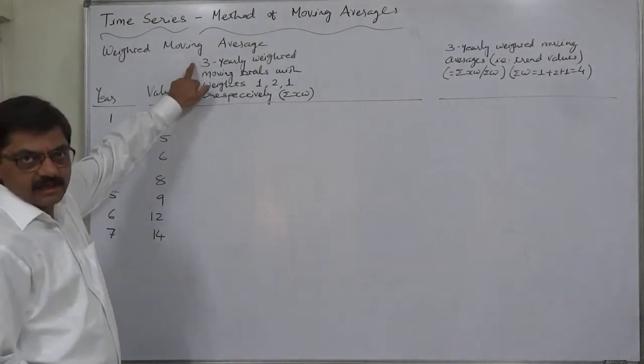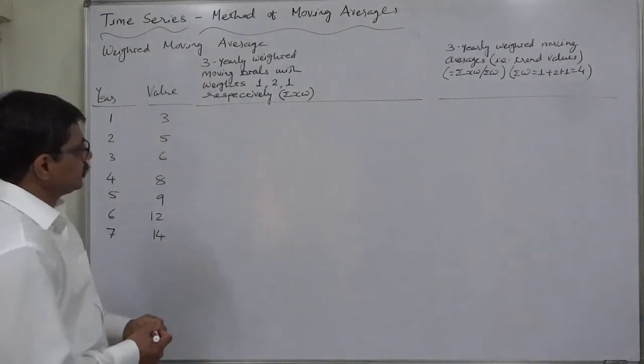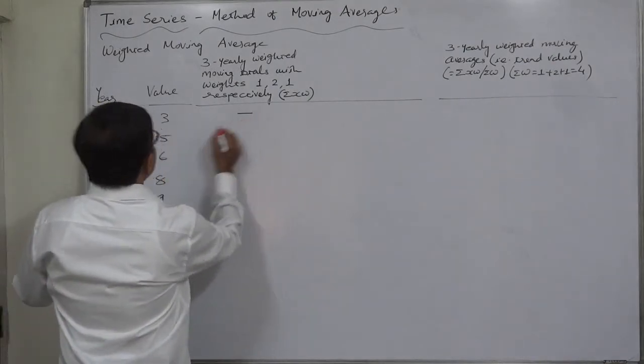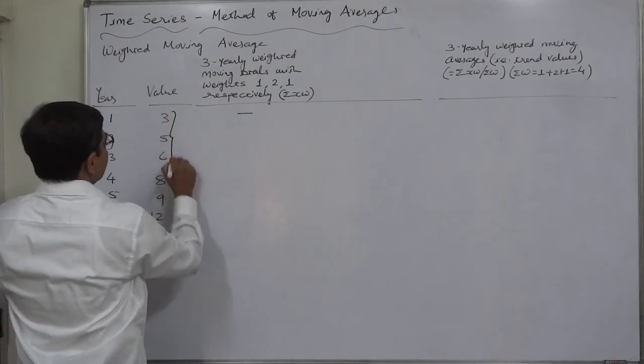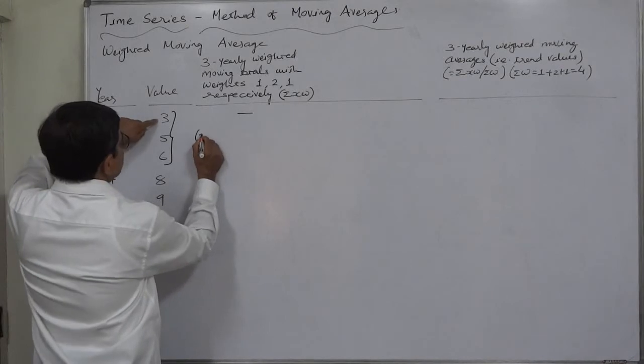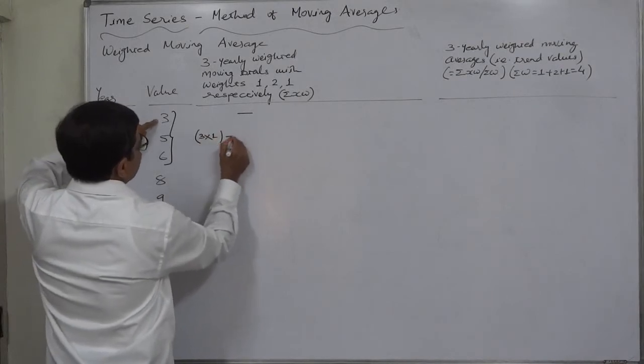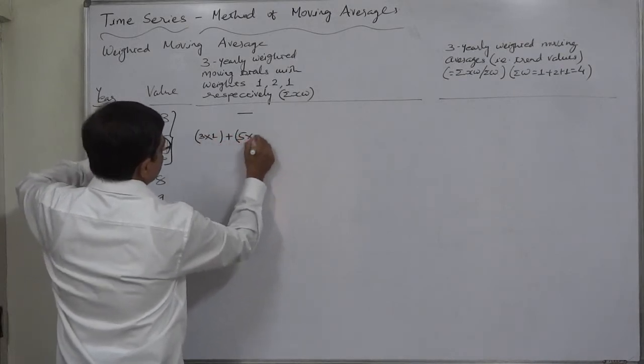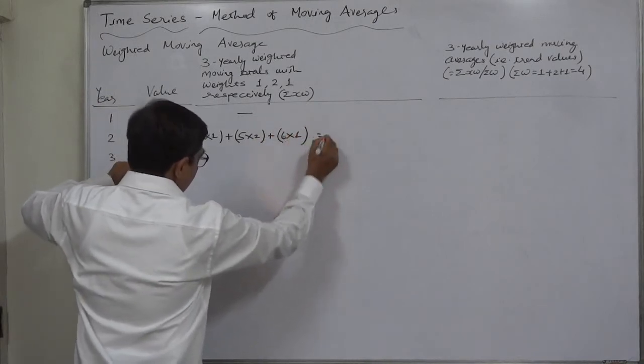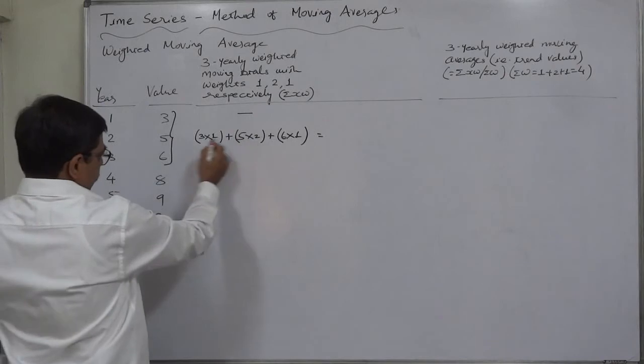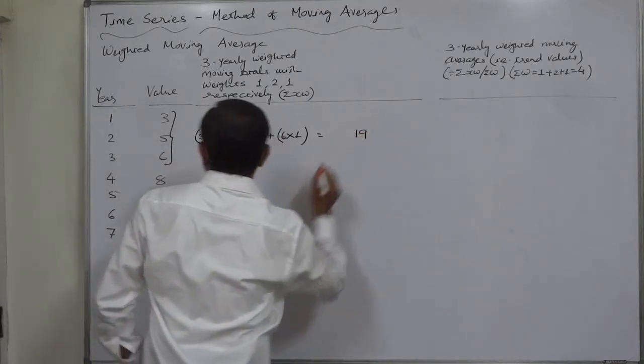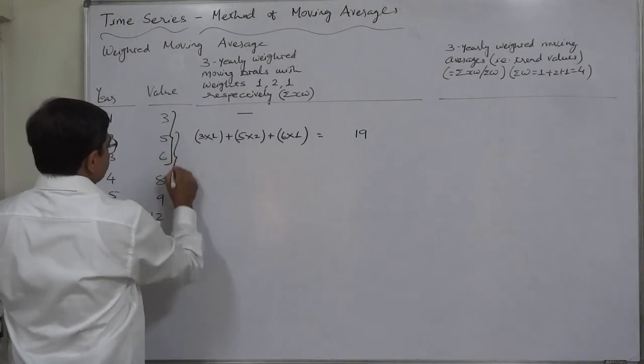In this case, the first total will be of first 3 after multiplying by the weights. First value is 3 multiplied by 1, plus second is 5 multiplied by 2, plus third is 6 multiplied by 1. 5 into 2 is 10, plus 3 is 13, plus 6 is 19.